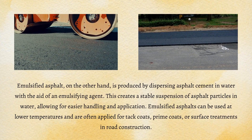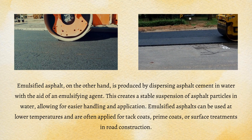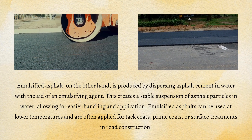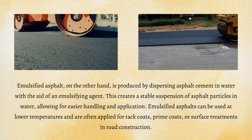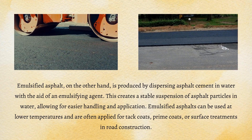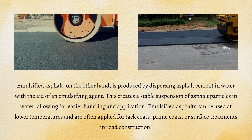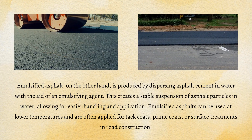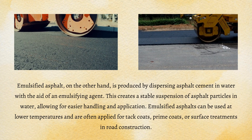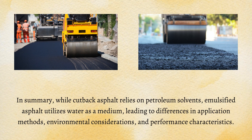Emulsified asphalt, on the other hand, is produced by dispersing asphalt cement in water with the aid of an emulsifying agent. This creates a stable suspension of asphalt particles in water, allowing for easier handling and application. Emulsified asphalts can be used at lower temperatures and are often applied for tack coats, prime coats, or surface treatments in road construction.